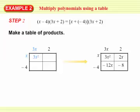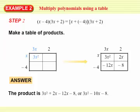Now all I need to do is take these four terms from the table and add them all together: 3x squared plus 2x minus 12x minus 8. Notice that I do have two like terms I can combine. The positive 2x and the negative 12x add together to make negative 10x. So the result — the product — when I multiply the original two binomials together is 3x squared minus 10x minus 8.